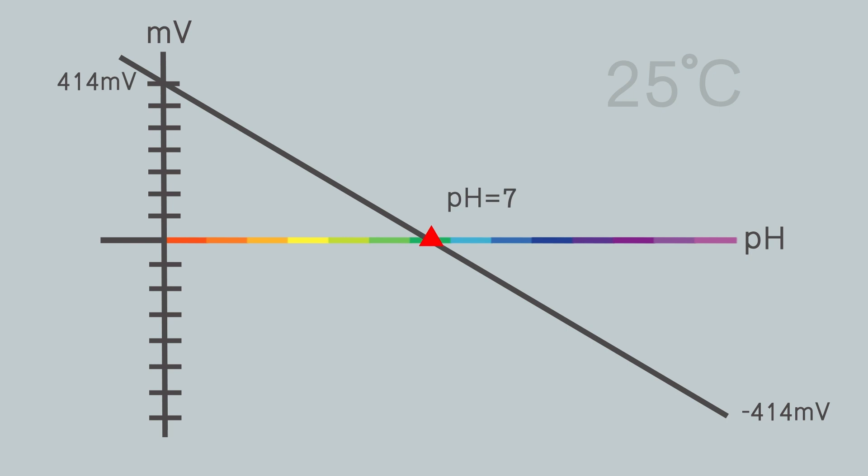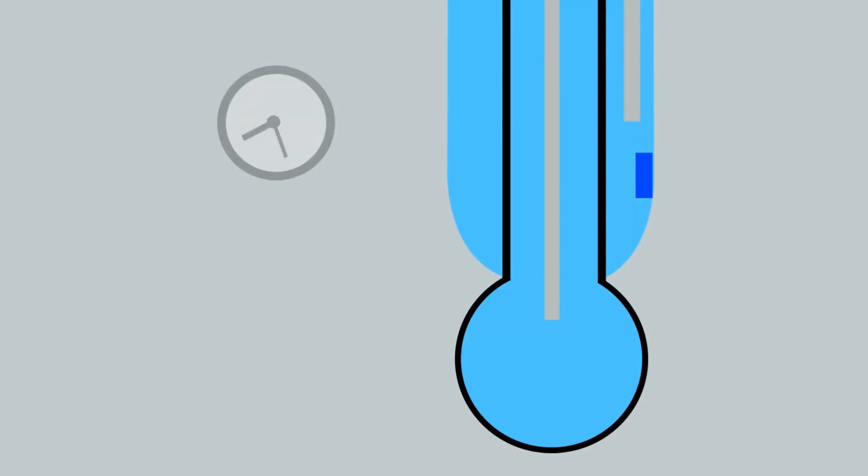As noted above, the theoretical potential at pH 7 is 0 millivolts, but actually, the potential is usually between negative 47 and 47 millivolts because of zero drift and asymmetric potential.